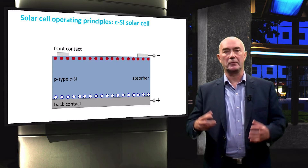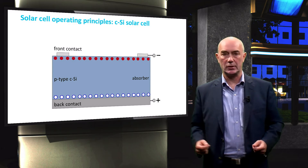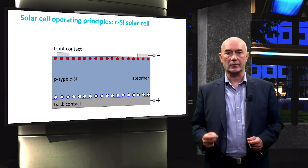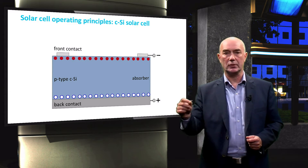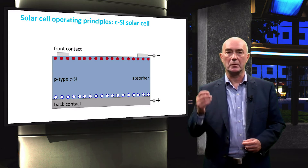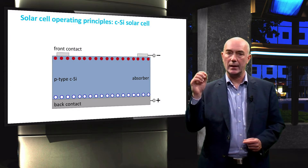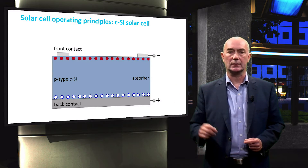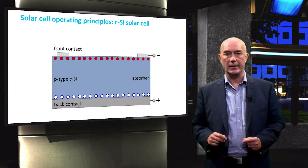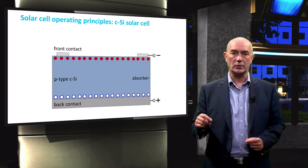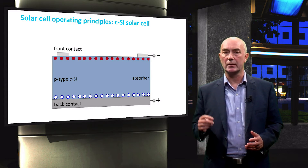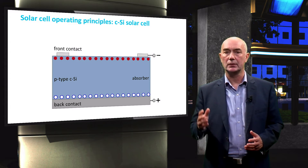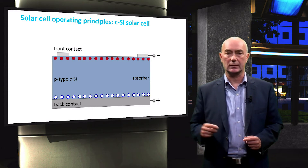If it were as we wish, electrons would be gathered at the front contact and holes would be gathered at the back contact. Then the front contact would be negatively charged relative to the back contact.